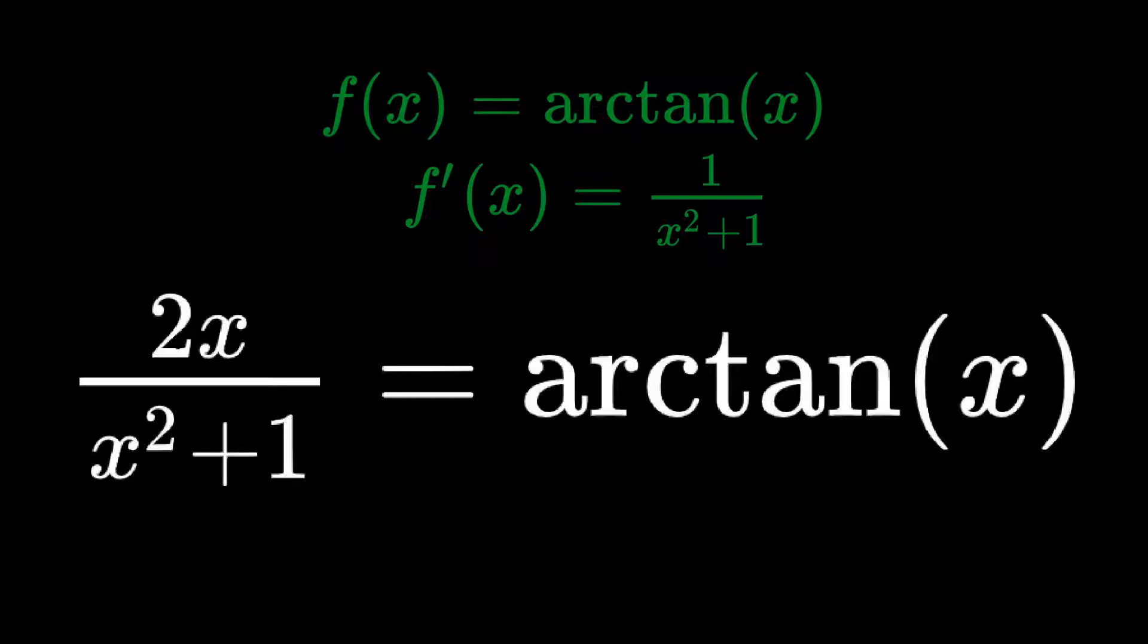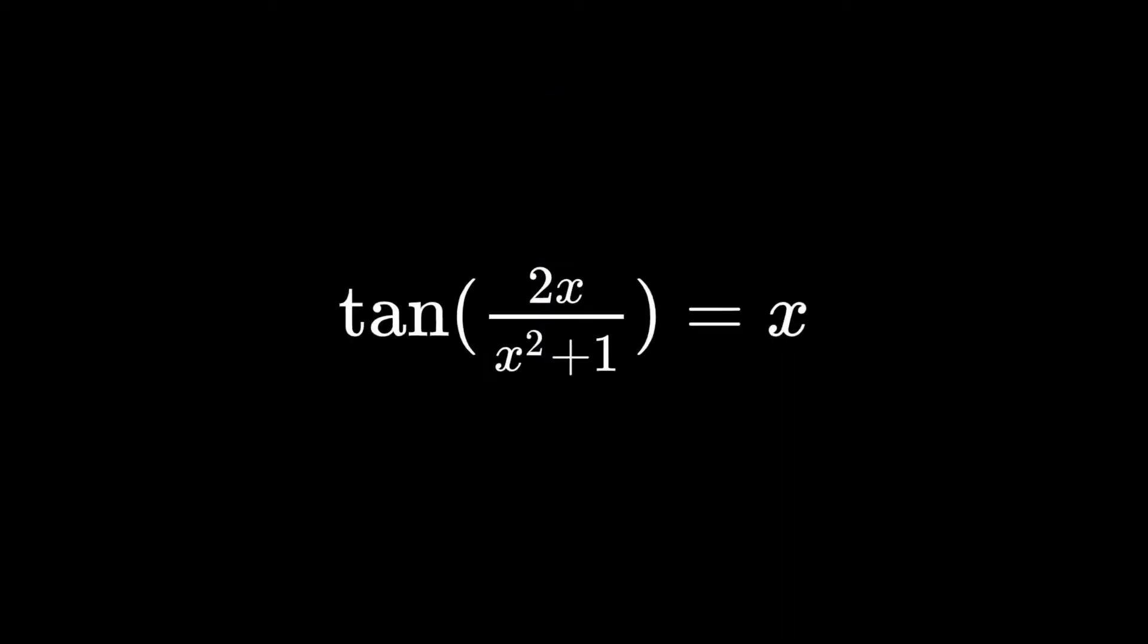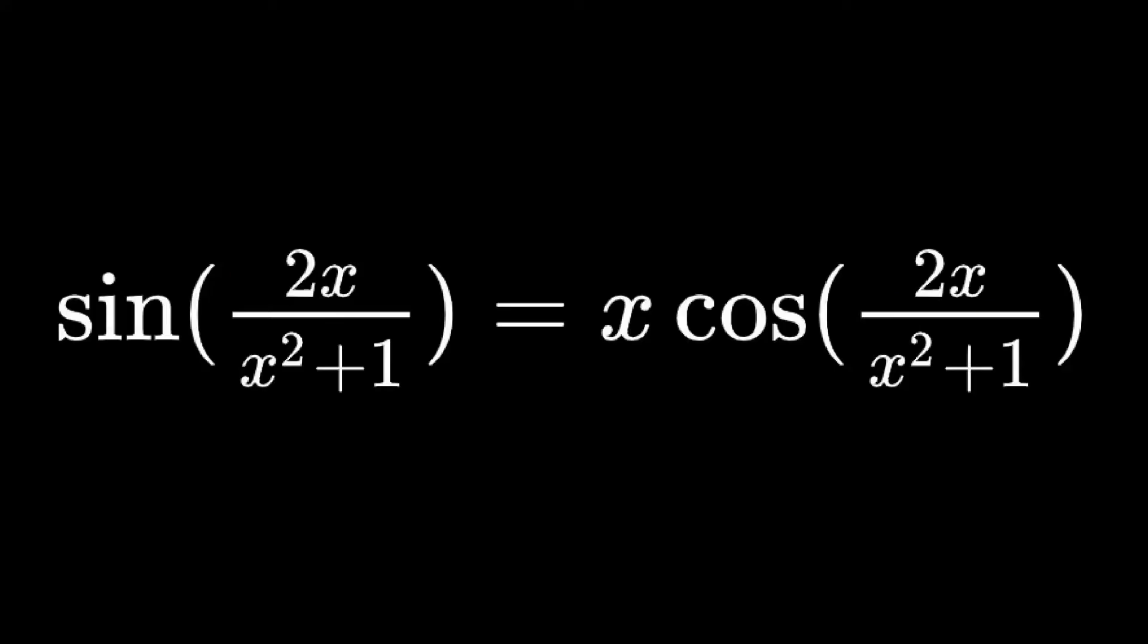Now that we have our equation, we can get to solving it. Taking the tangent of both sides gets x equals tangent of 2x over x squared plus 1. Since tan is sine over cosine, we can multiply both sides by cosine of 2x over x squared plus 1 to get x cosine of 2x over x squared plus 1 equals sine of 2x over x squared plus 1.